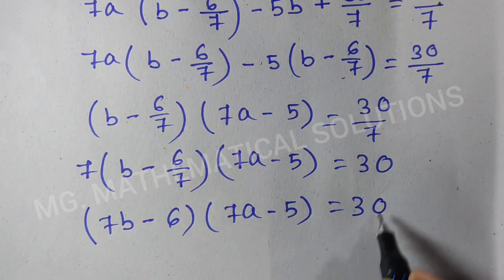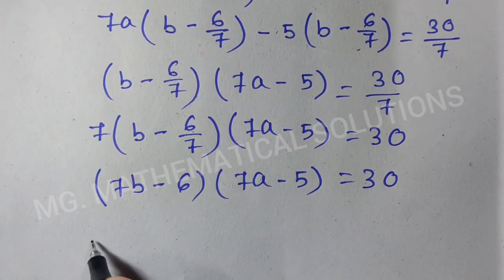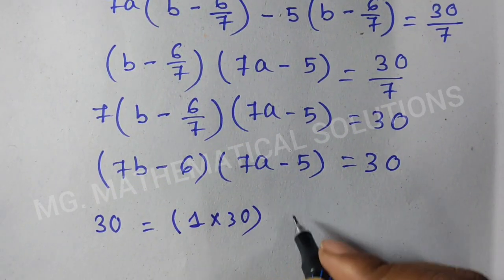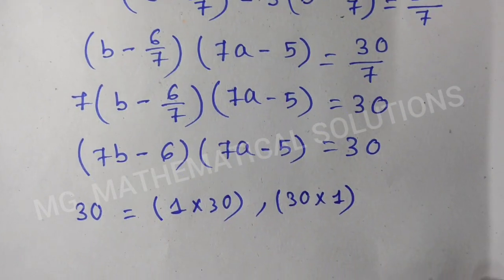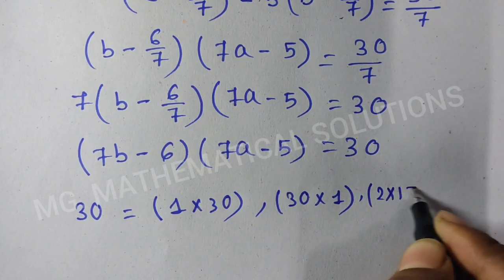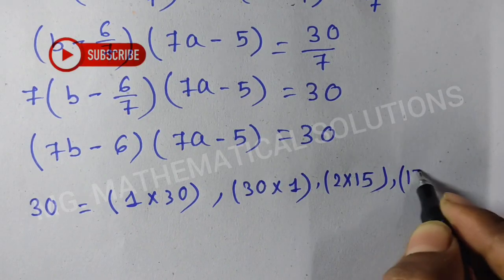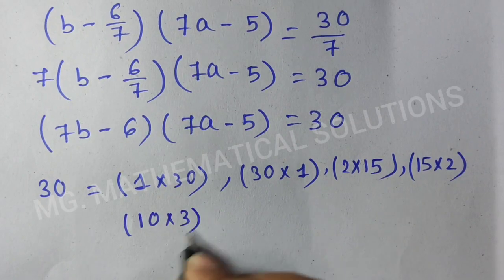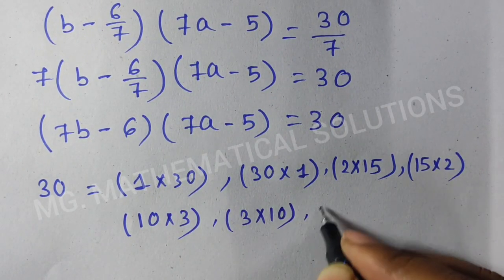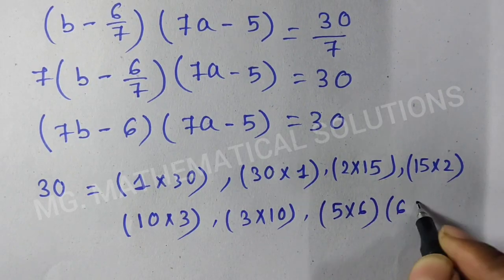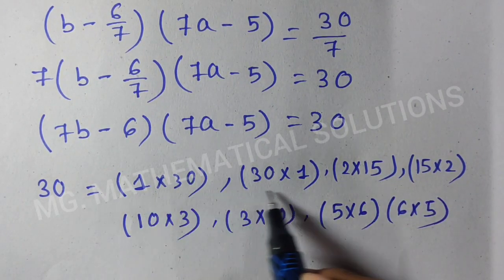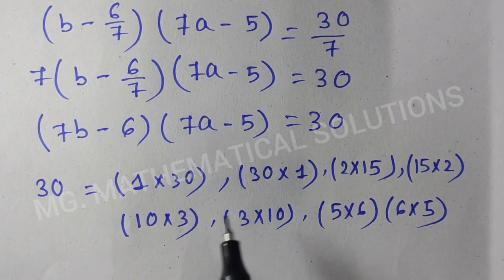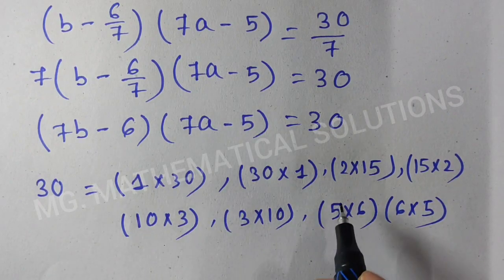Now we factorize 30. We can write 30 as: 1×30, 30×1, 2×15, 15×2, 10×3, 3×10, 5×6, and 6×5 — giving us 8 cases. If we include negative values we get 16 cases, but here we solve just for positive values.